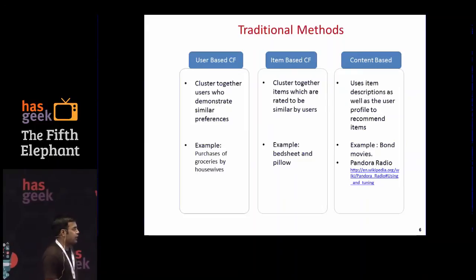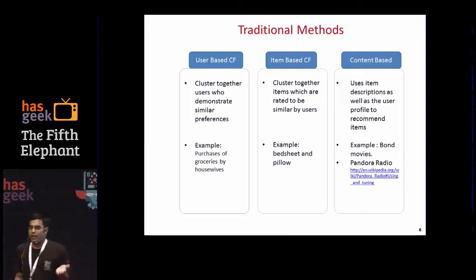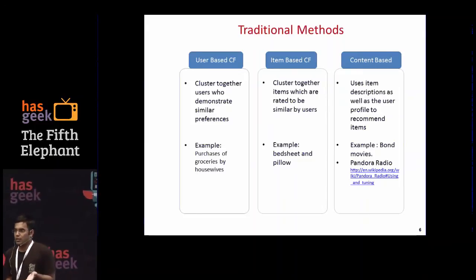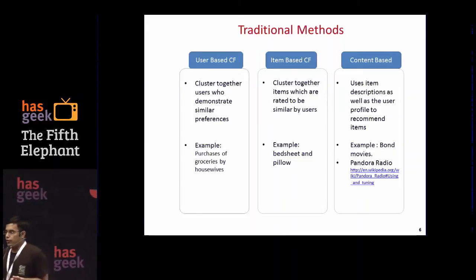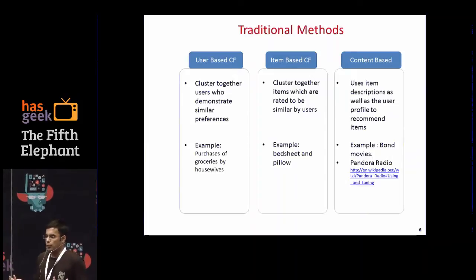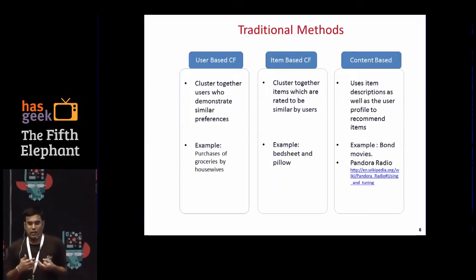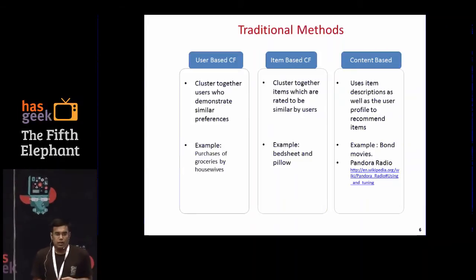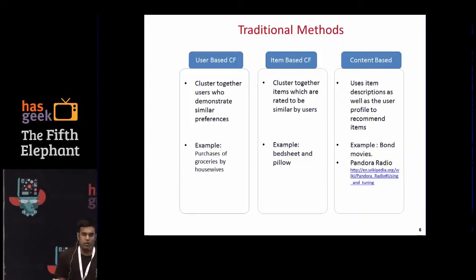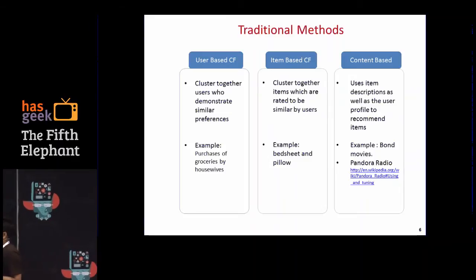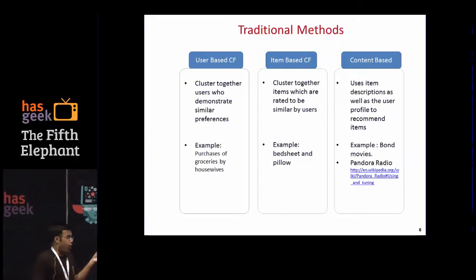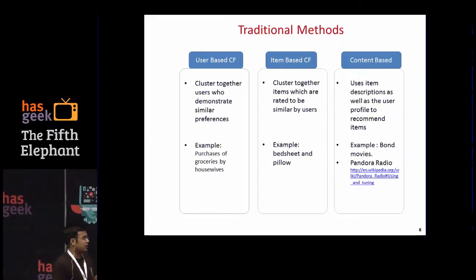Coming to content-based recommendation systems, you consider the metadata of the items. For example, if you consider books, it could be the publisher, the author, the year in which it was published, the genre, the number of pages — stuff like that. You consider the metadata of the items in coming up with recommendations.